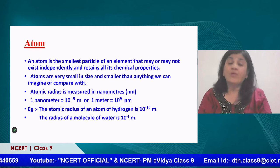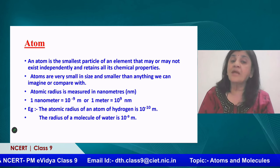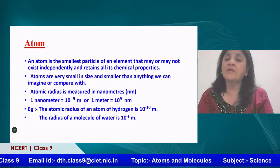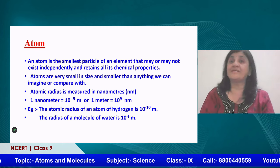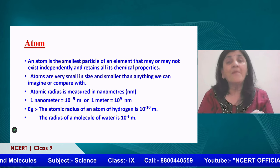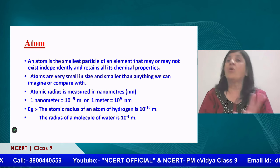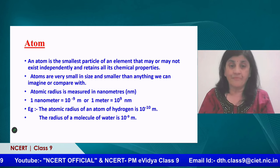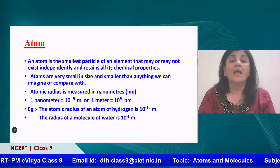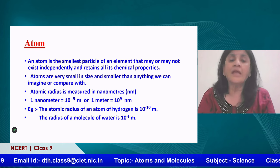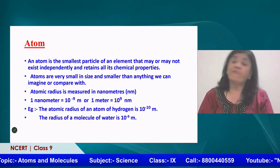An atom is the smallest particle of an element that may or may not exist independently, and retains all its chemical properties. The reason we say 'may or may not' is that hydrogen always exists as H2 — two hydrogen atoms combined to form a hydrogen molecule — it doesn't exist independently. Similarly, oxygen always exists as O2. But in some elements, the atoms may exist independently. Atoms are very small in size, smaller than anything we can imagine.